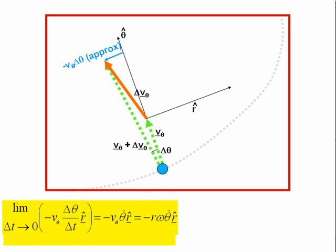The rate of change of this component is given by the limit as delta-t tends to 0 of minus v-theta delta-theta divided by delta-t times r-hat, which equals minus v-theta theta-dot r-hat, which equals minus r omega theta-dot r-hat, which equals minus r theta-dot squared r-hat. This is the centripetal acceleration in our polar coordinate acceleration equation.